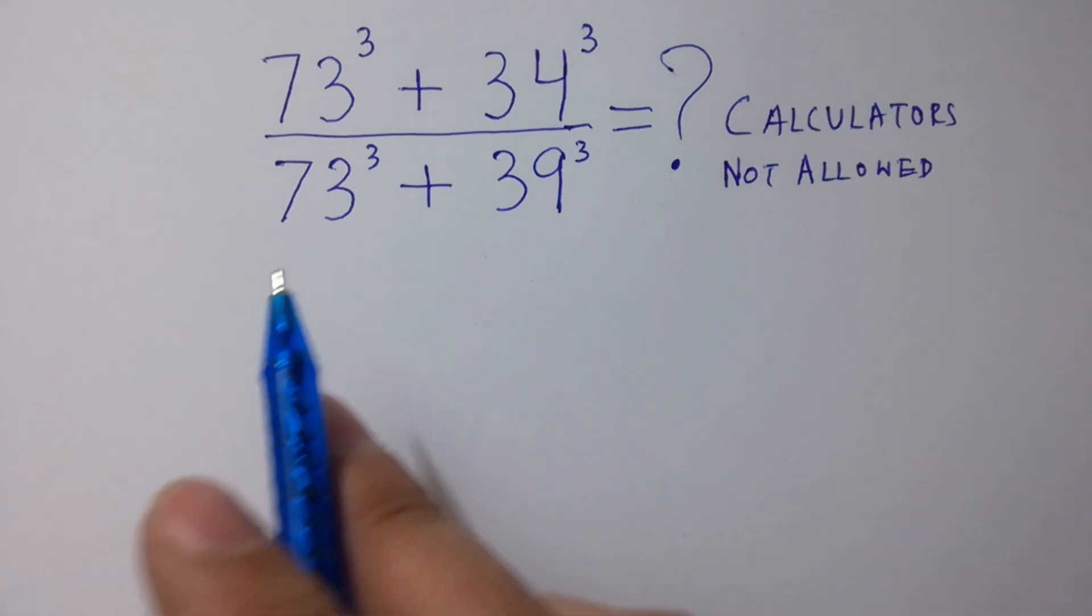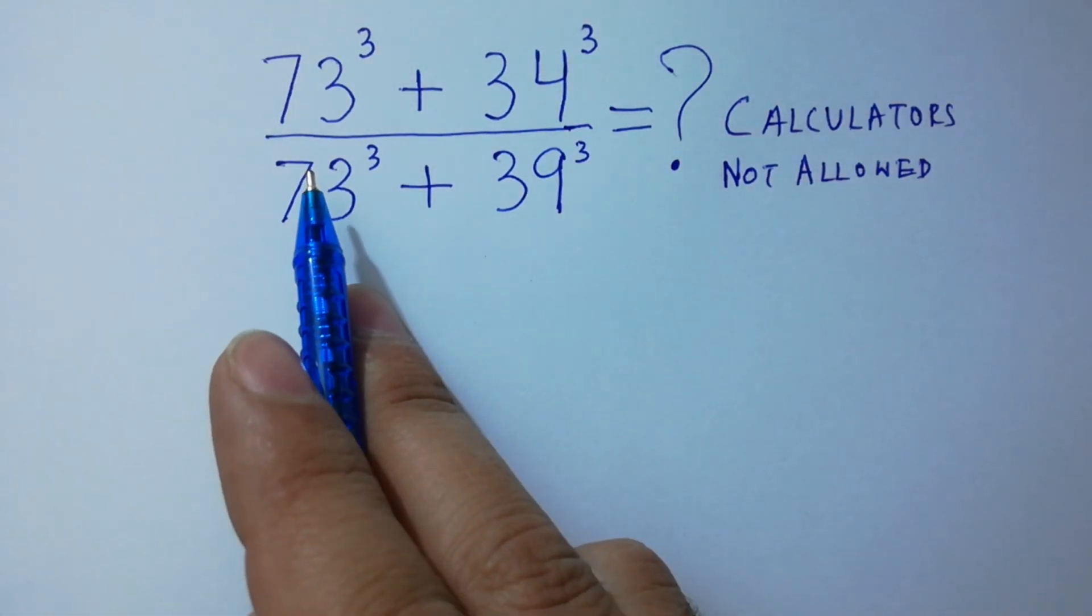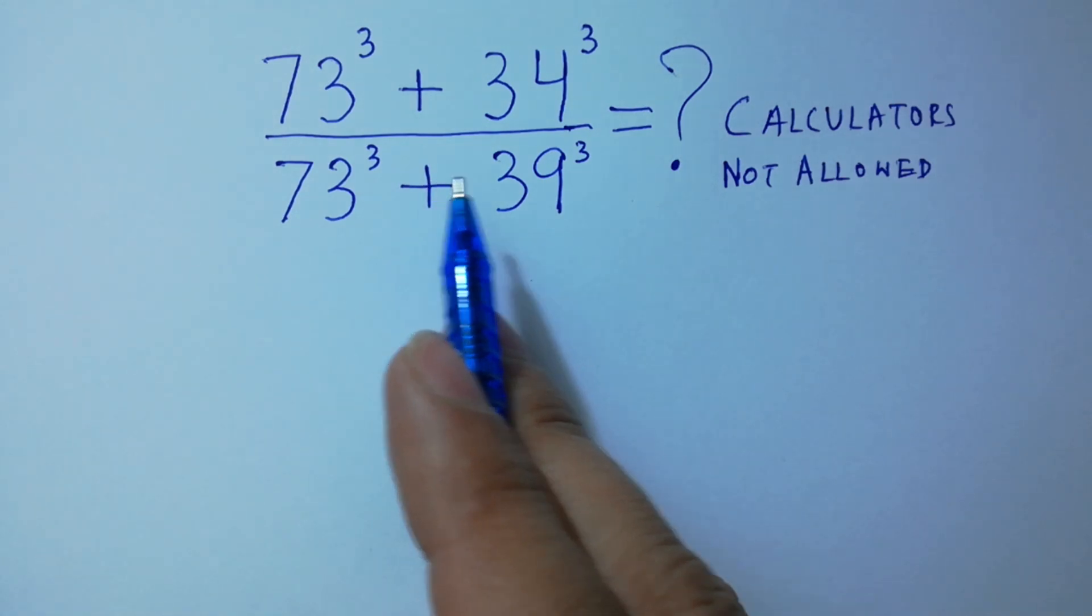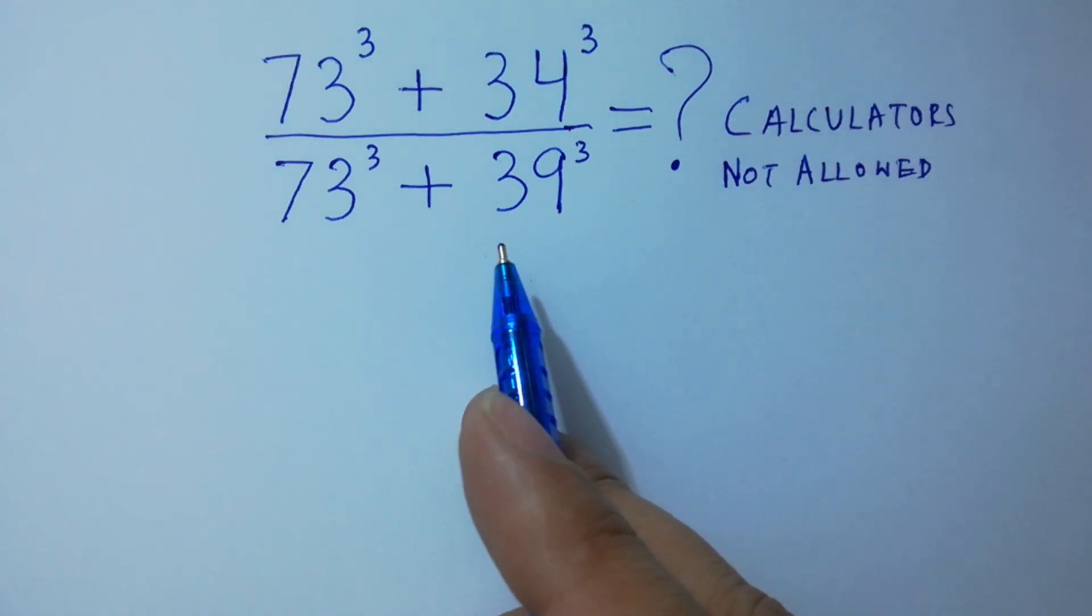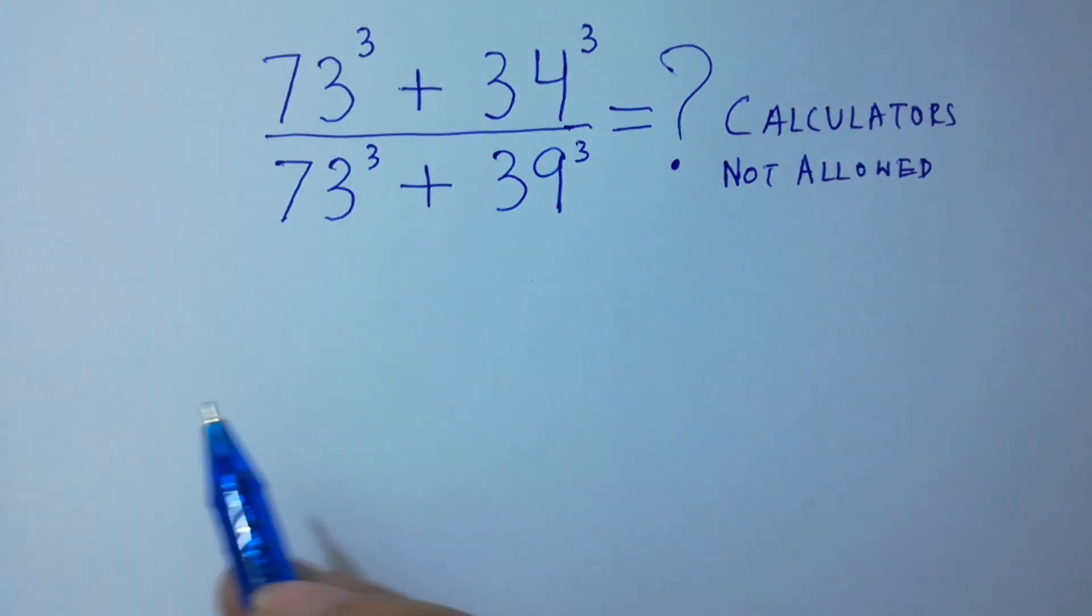Hello friends, can you solve this: 73 cube plus 34 cube over 73 cube plus 39 cube without using any calculator? Let's have a solution.